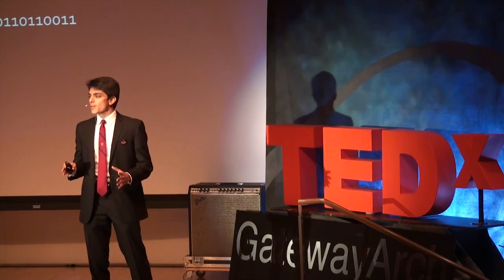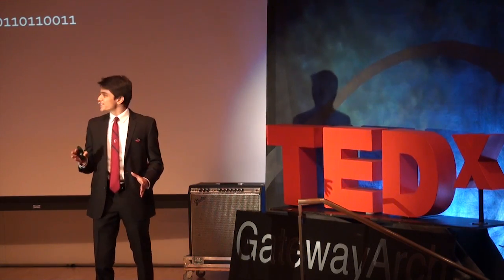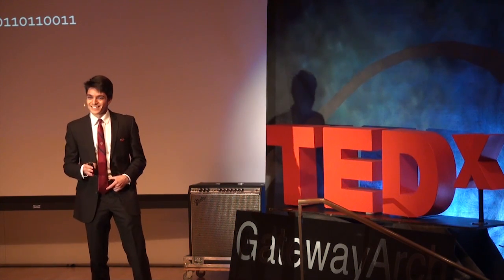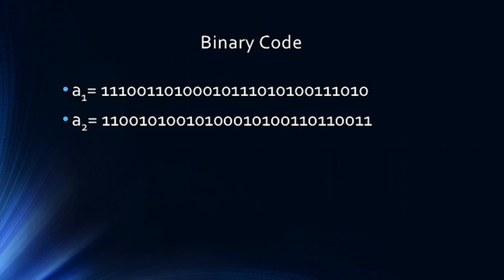Before I tell you about what we made, I want to tell you a little bit about binary code. Binary code is the language of technology. It's the way your computer thinks, the way your computer processes, the way your computer learns. And it's essentially just long strings of zeros and ones, which in our case we refer to with the variable a.